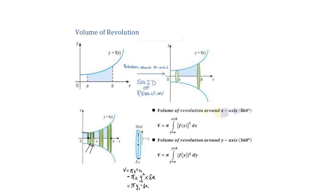If a curve is rotated 360 degrees about the x-axis, the volume is V = π∫[f(x)]² dx. The function must be in terms of x. You square the function, integrate it, apply the limits a and b, then multiply by π.